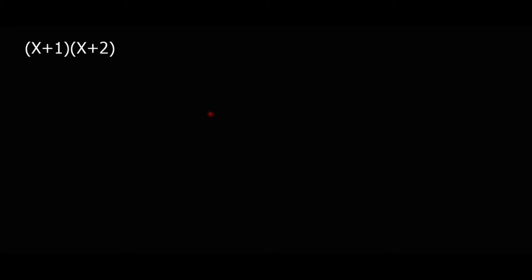Remember, a binomial is an expression with two terms. For example, x plus 3 — only two terms. The word 'bi' means two, so a binomial is an expression with two terms. And a trinomial is an expression with three terms — the word 'tri' means three.